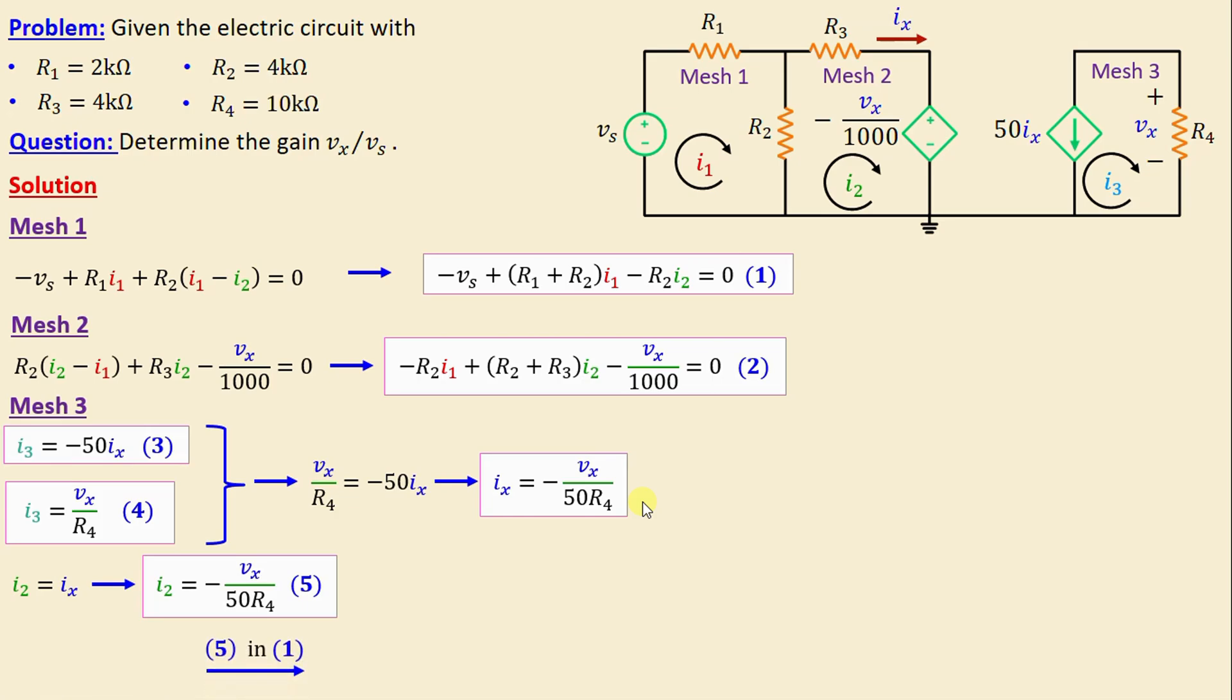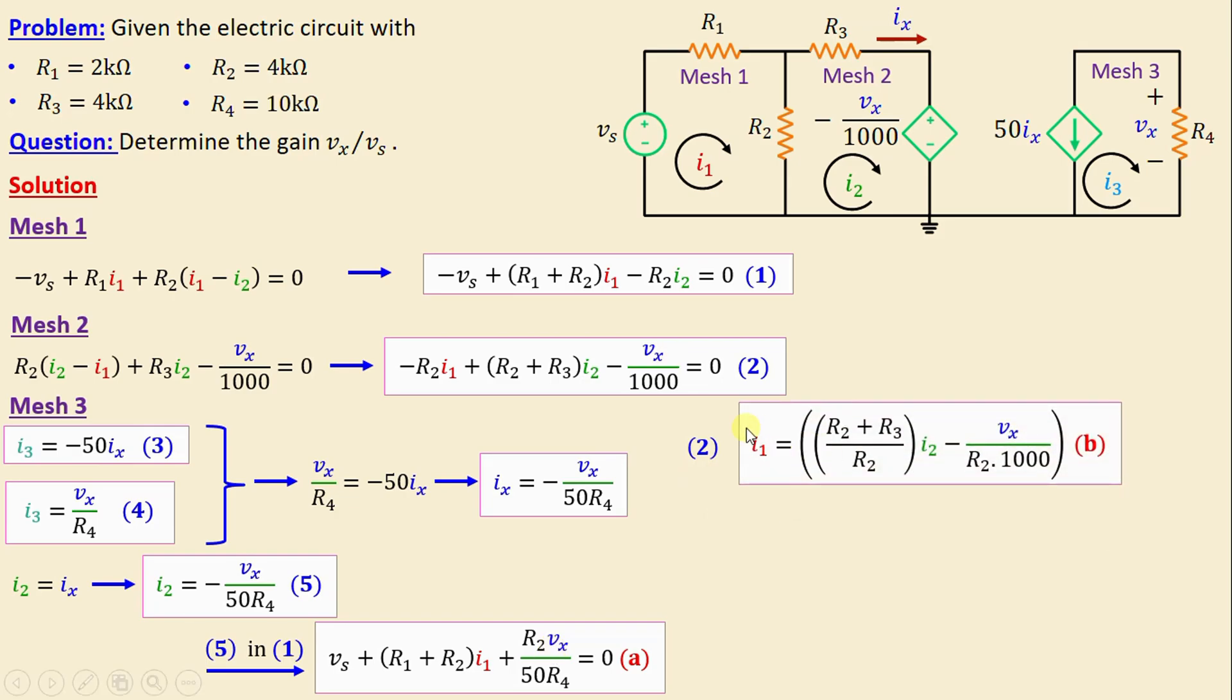Now, by substituting 5 in 1, we just need to replace I2 with its expression which is given in equation 5. We derive one equation in terms of I1 and Vx. Let's move on now to equation 2. And from equation 2, we can write I1 is equal to R2 plus R3 over R2 I2 minus Vx over R2 multiplying by 1000. And I will call this equation B.